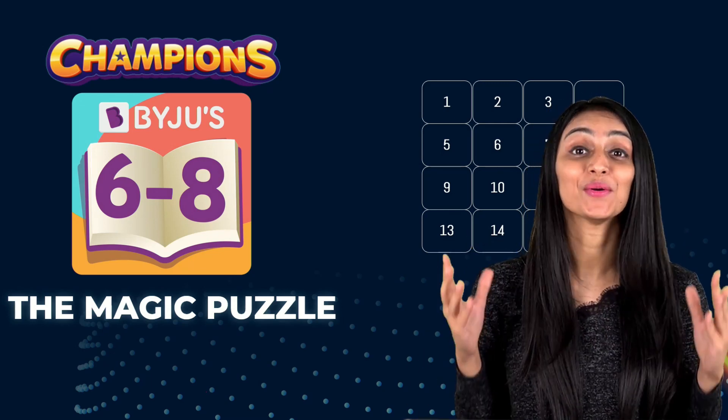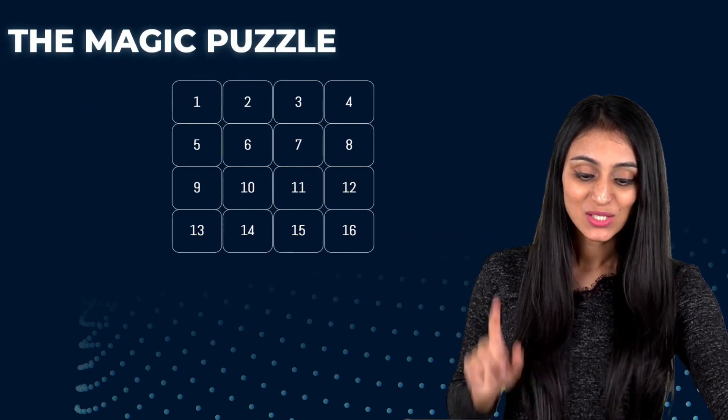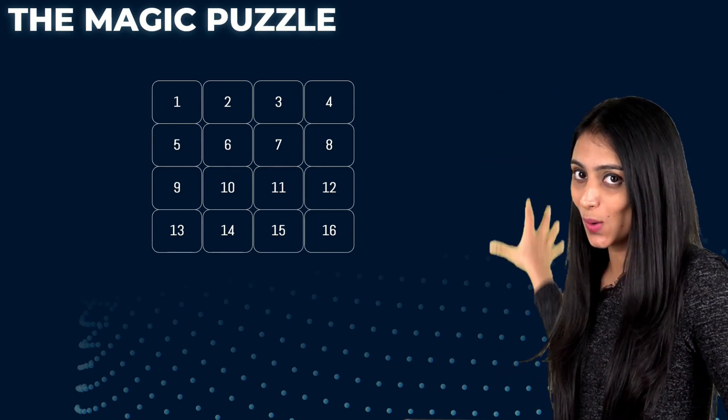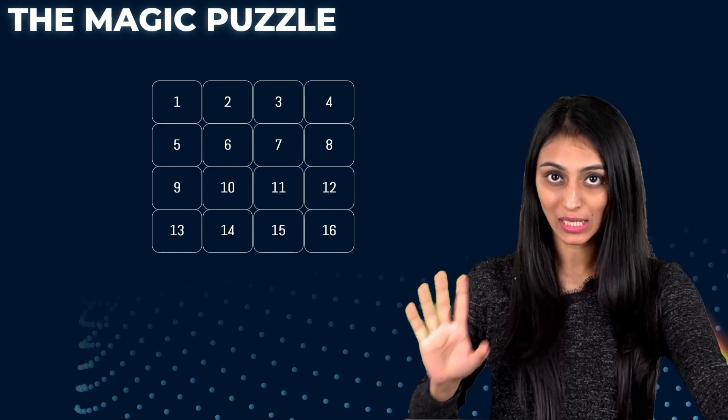You might be wondering what's so magical about it. Well to see that let's move to the next slide. So as you can see here we have got some numbers in rows and columns. So what we need to do is one by one we need to pick up four numbers.